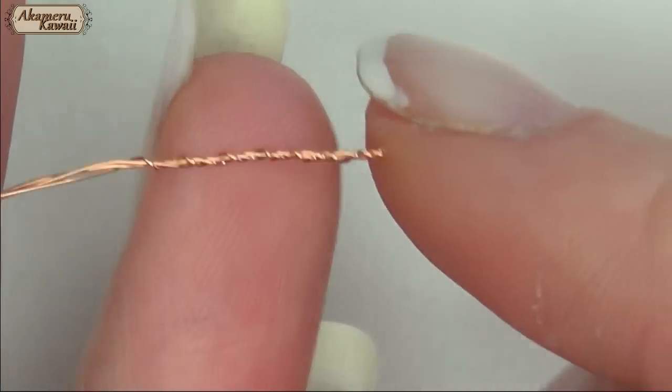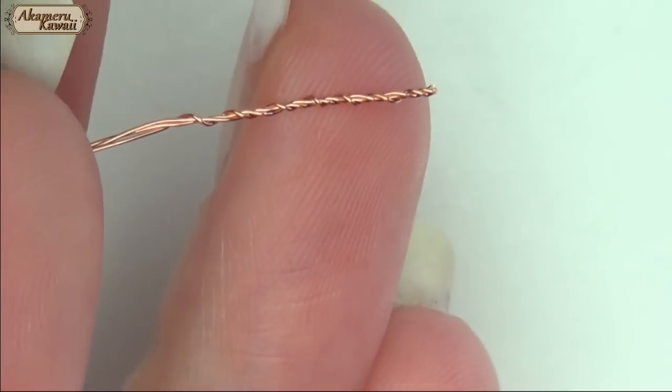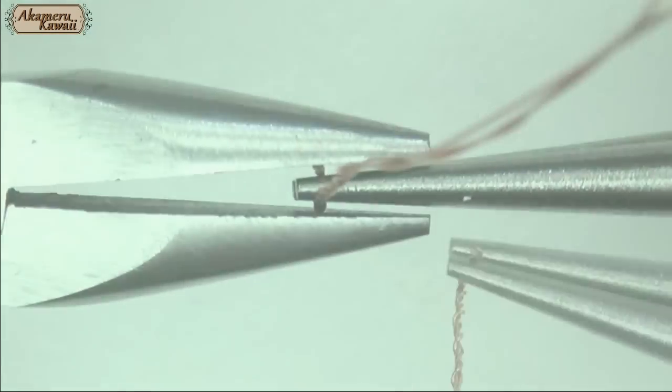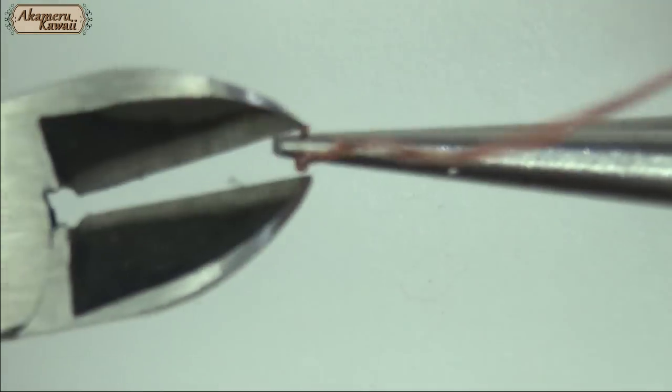Another way to make a ring is to twist wires together and then cut a small piece and bend it. You can leave it like that, or add a bead like before.